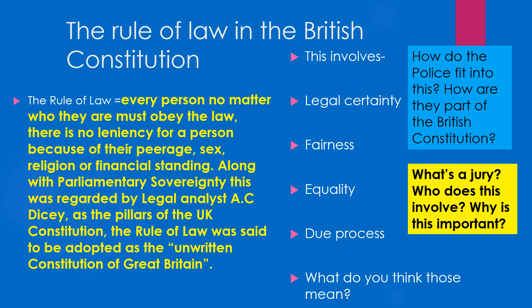Rule of law in the British Constitution means that everybody, no matter who they are, must obey the law. They won't face any leniency depending on whether they're a peer — that means a lord — what sex they are, their religion, or financial standing. It's a massive part of our democracy and our constitution that everybody should face the law exactly the same. It means there is legal certainty, fairness, and equality in due process — that everyone will go through the same process.